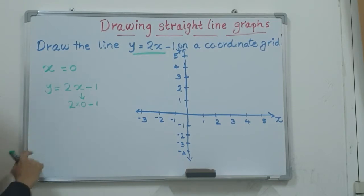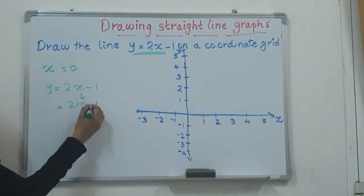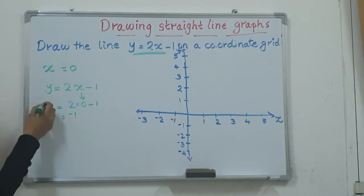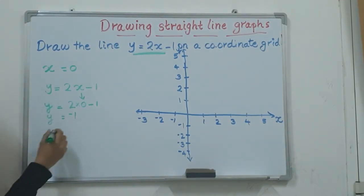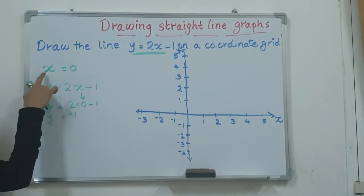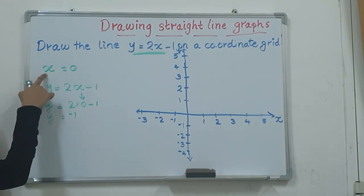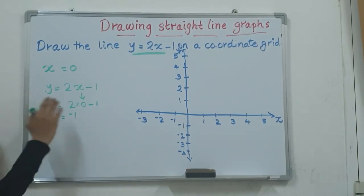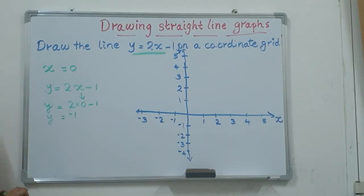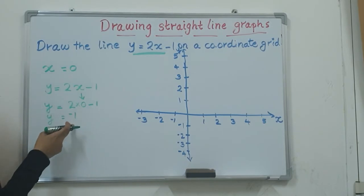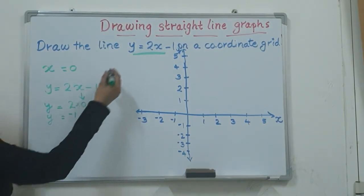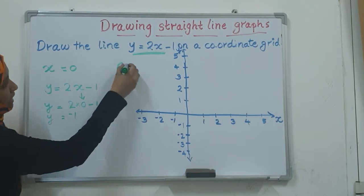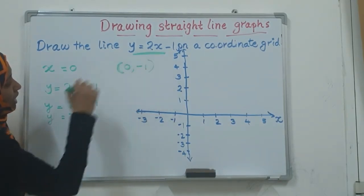2 multiplied by 0 is 0, so we have 0 minus 1, which gives us negative 1. So y equals negative 1 when x equals 0. The first coordinate point is (0, negative 1).